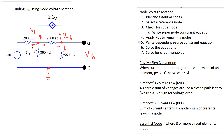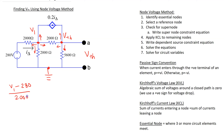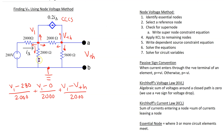Now we can apply Kirchhoff's current law to these nodes. The first branch current is the voltage at this side V1 minus the voltage here, which is 280 volts because the voltage source is directly connected between this point and ground, divided by the resistance — so we get (V1 − 280) / 2000. The second branch current through this resistor is V1 / 2000, and through the next resistor is (V1 − V_th) / 2000. In the last branch there is a dependent current source — a current-controlled current source — so this branch current equals plus 0.2·I_delta, giving a KCL sum equal to 0.